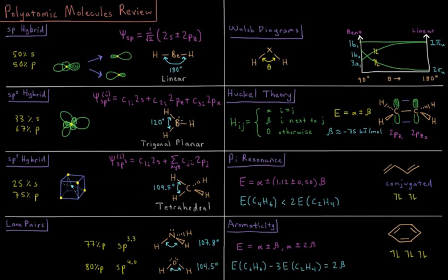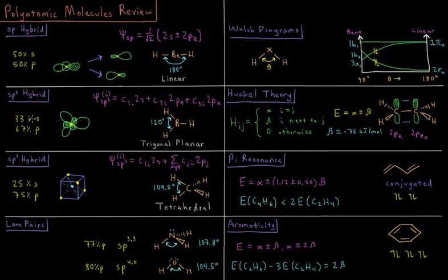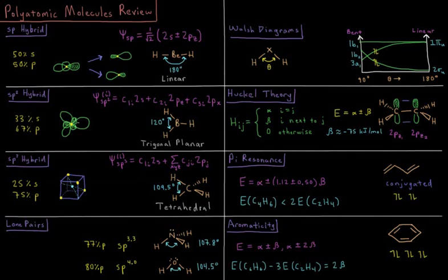For borane BH3, we have 120 degrees between each hydrogen, between each BH bond, and a trigonal planar arrangement. So there we're including two p orbitals and an s orbital in our hybrid orbitals to give sp2 hybrids, which are one-third s in character and two-thirds p.